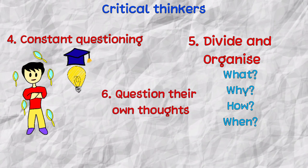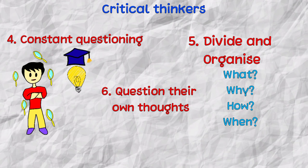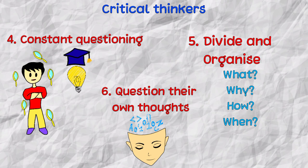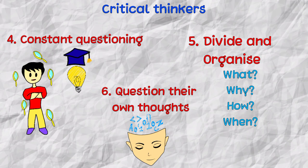Sixth is that they question their own thoughts. We are humans and have our own biases. Critical thinkers know that, hence they question and validate their own thoughts by asking themselves, why did I think like that? Is there any other way to think? They do this by finding evidence that validates their thinking process.